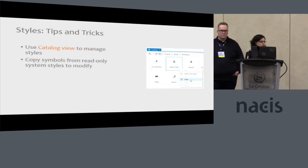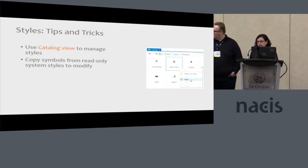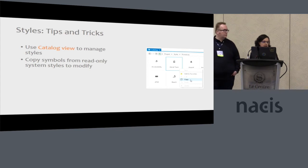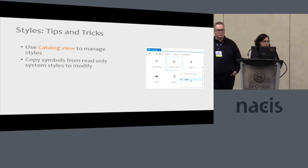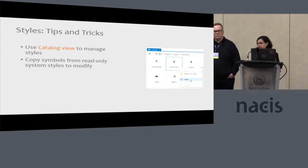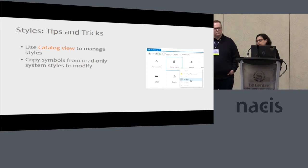If you used ArcMap, you might have known about the style manager. In Pro, styles are now a first-class citizen — they're a project item. You use the catalog view in ArcGIS Pro to manage them. It's more visual and has a lot more functionality that's easier to find. A really good use case is taking the symbols Esri provides — all Esri symbols are read-only — but it's very easy to grab them and copy them into your own styles to modify as you like.